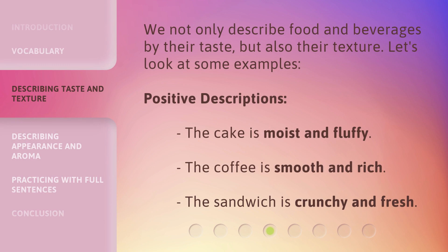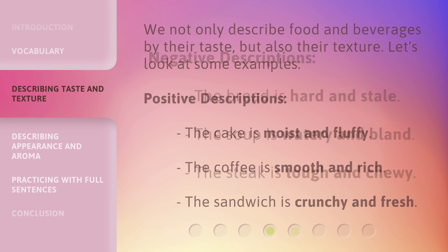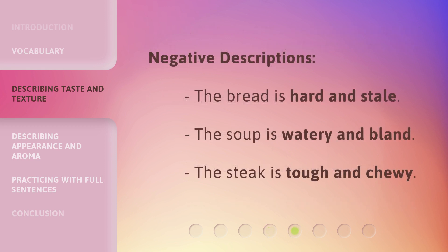We not only describe food and beverages by their taste, but also their texture. Let's look at some examples. Positive descriptions: The cake is moist and fluffy. The coffee is smooth and rich. The sandwich is crunchy and fresh. Negative descriptions: The bread is hard and stale. The soup is watery and bland. The steak is tough and chewy.